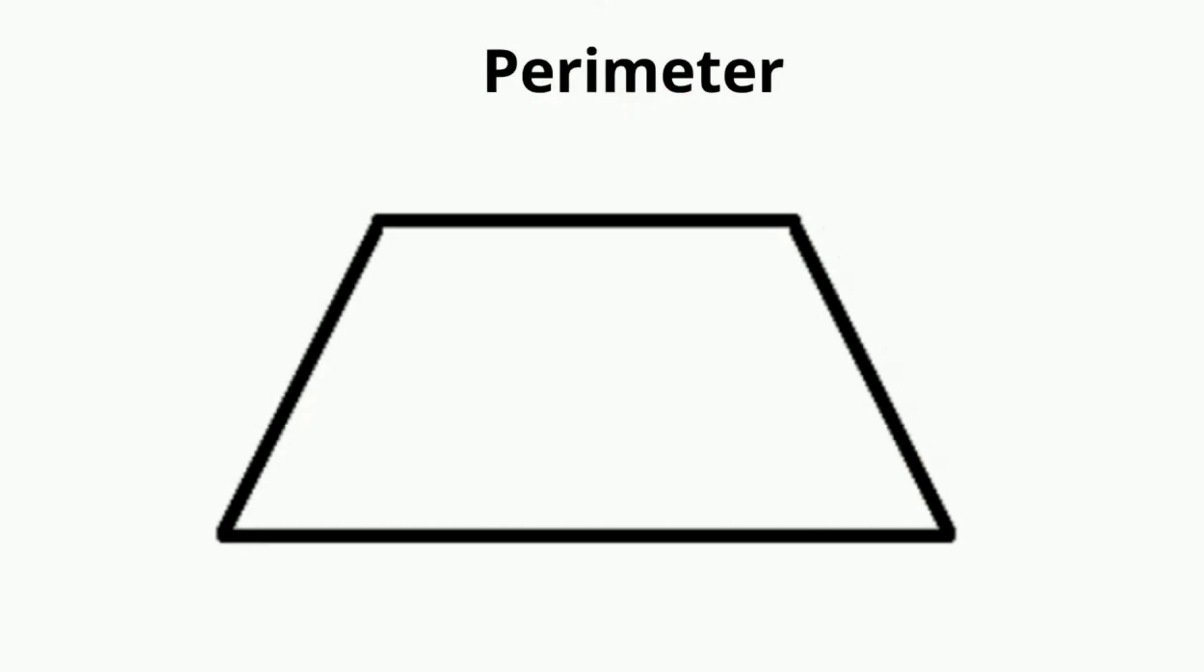To find the perimeter, just add the length of the four sides: a plus b plus c plus d.